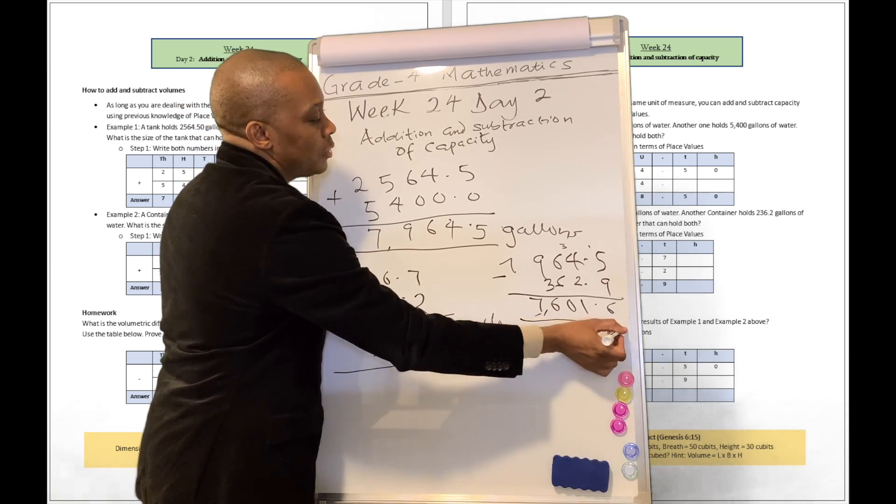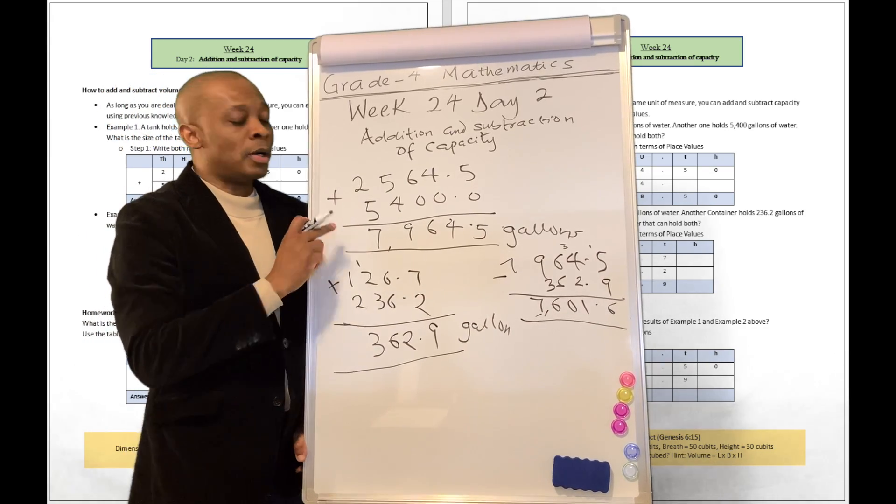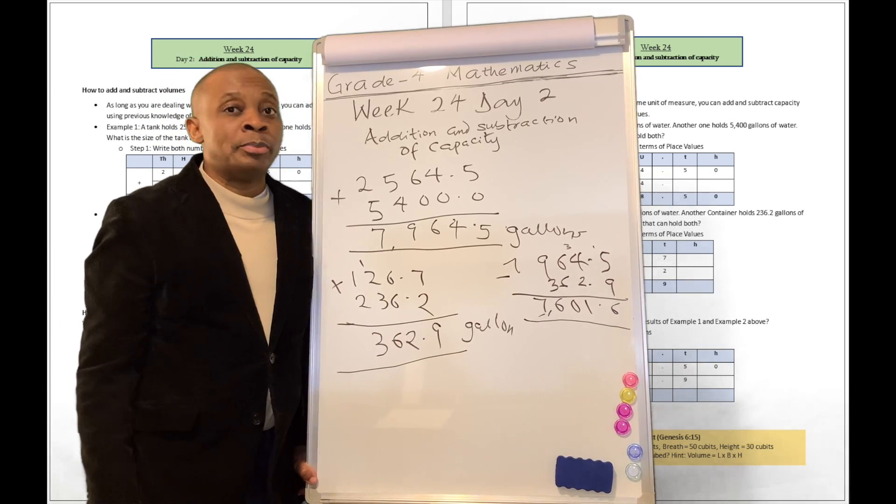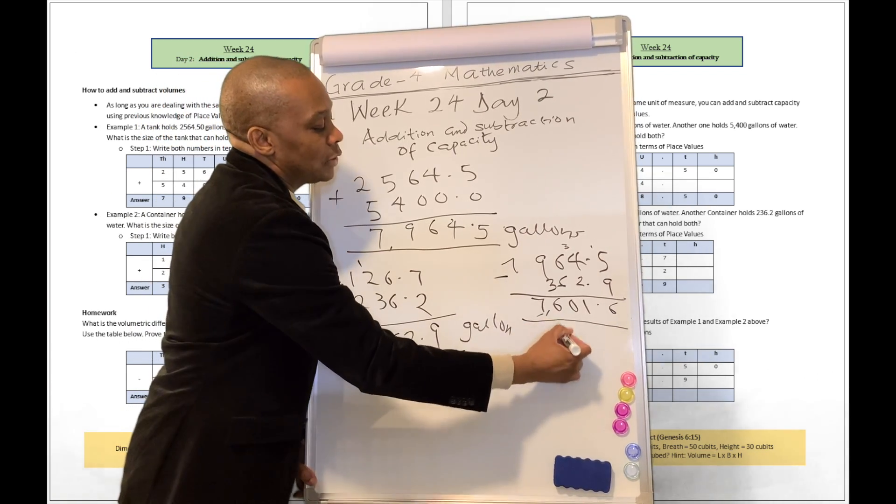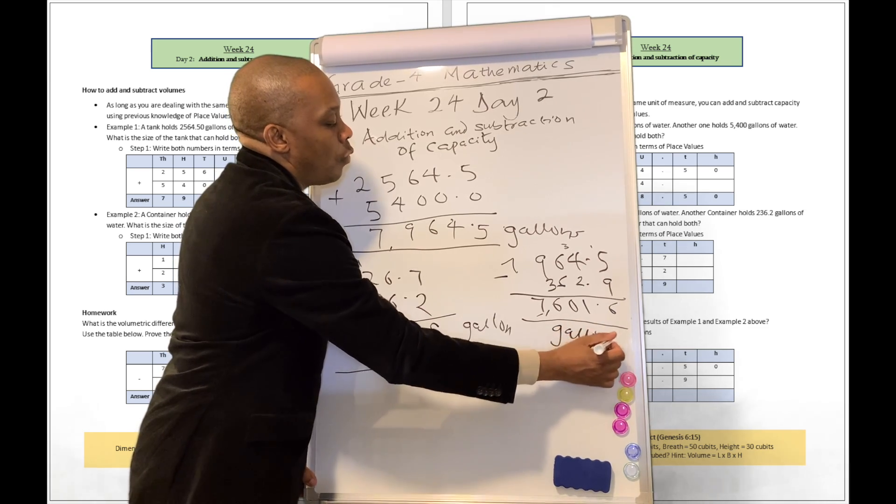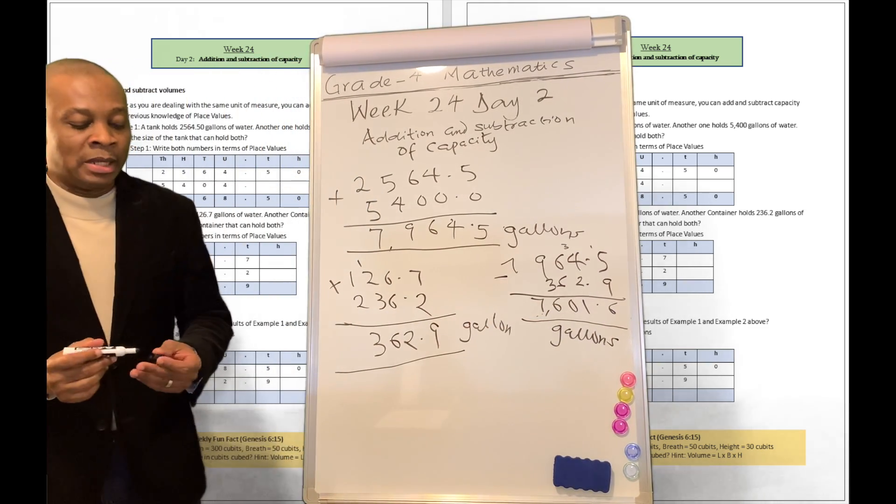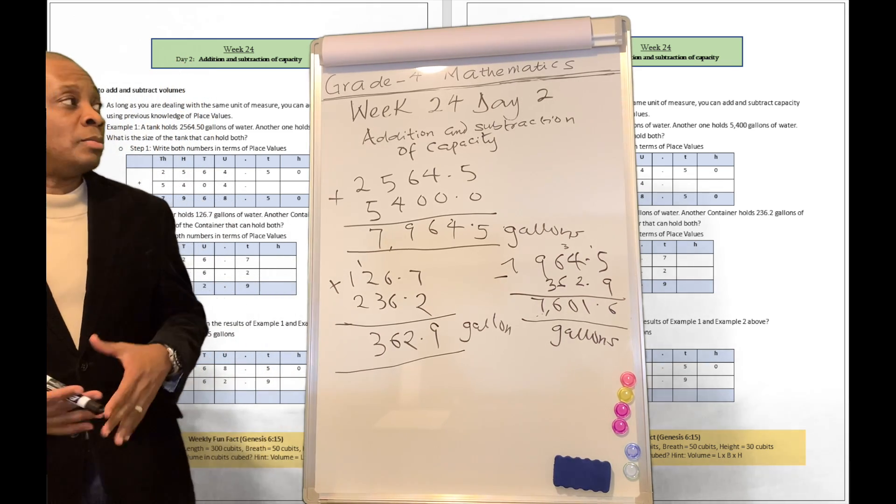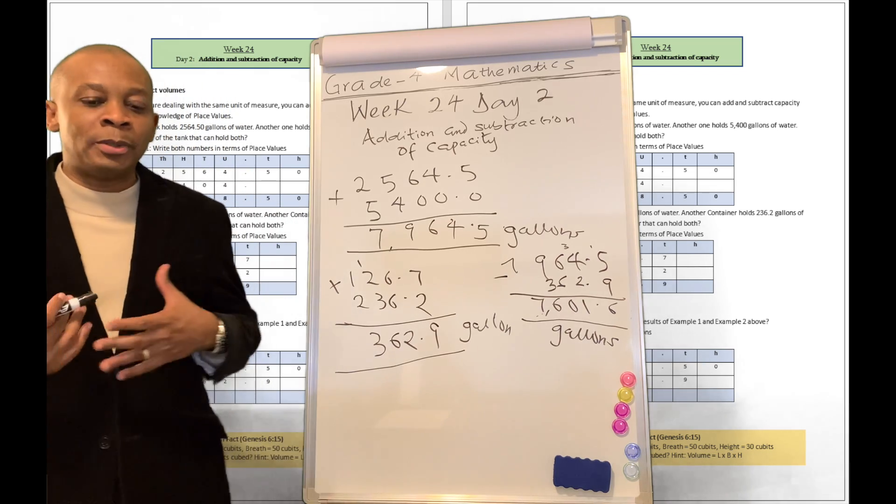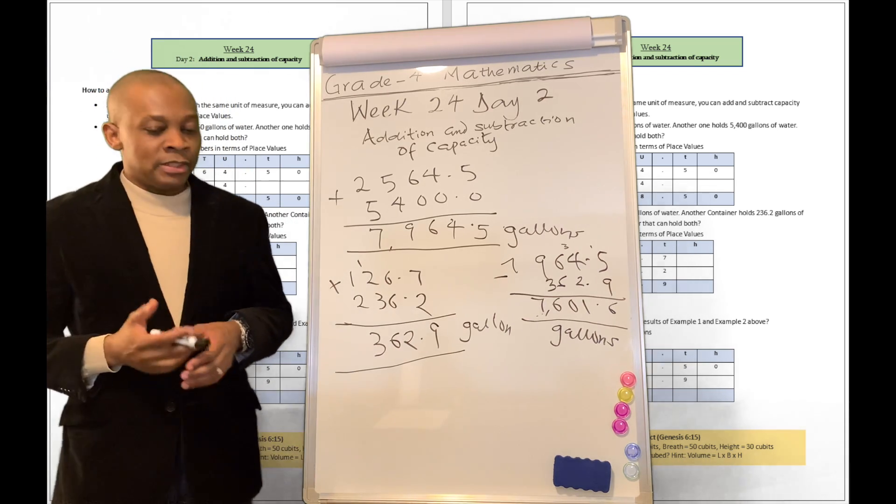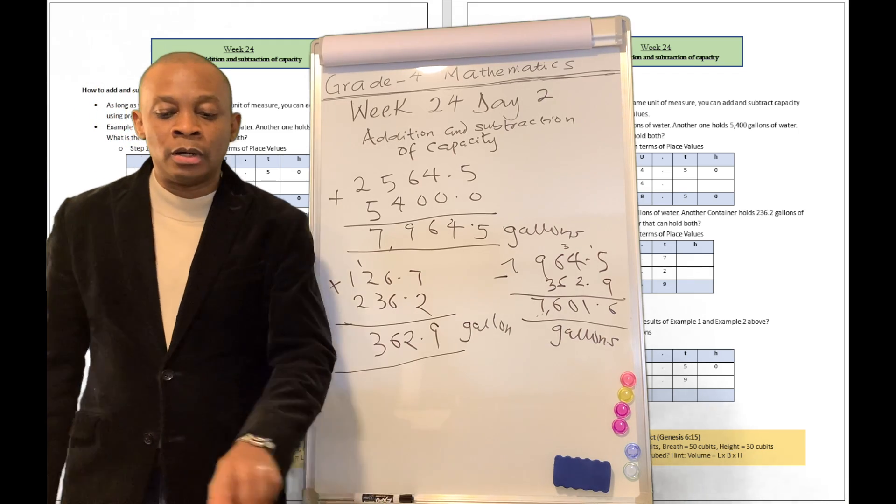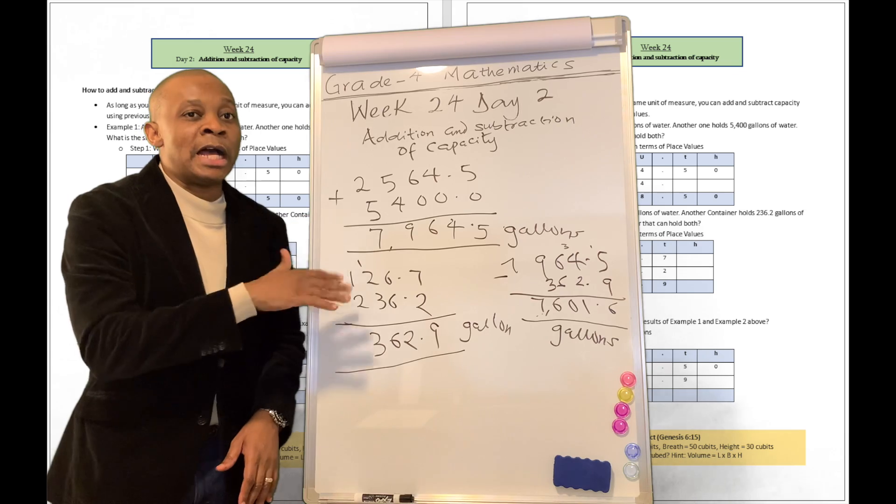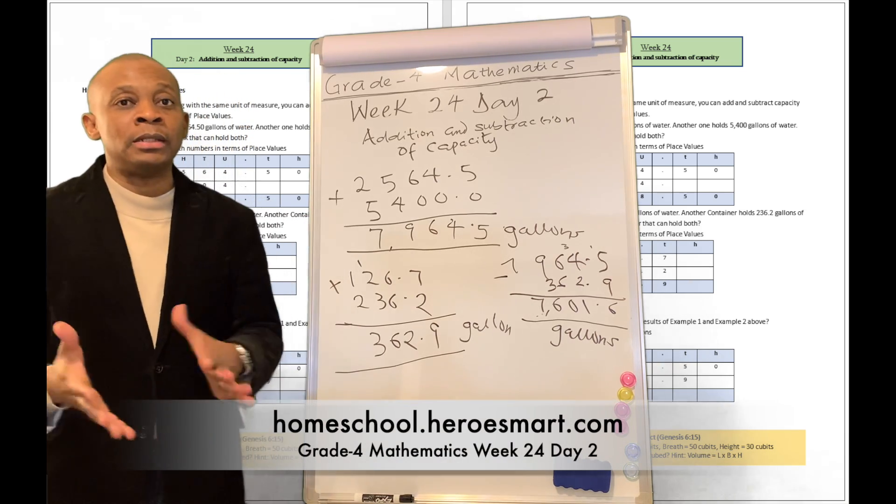So the volumetric difference between container number 1 and container number 2 is going to be 7,601.6 gallons of water. That's how you can apply your lessons of addition and subtraction to capacity measurements. It's that simple. Please go ahead and turn to page number 180. You are going to see additional explanations there, especially how everything fits into place values in the table.